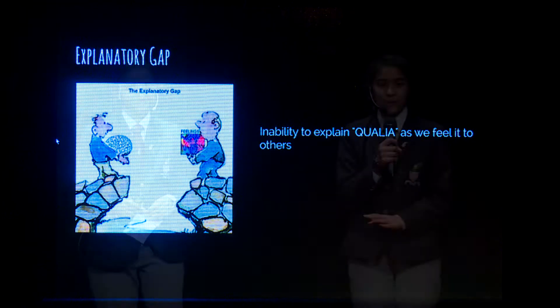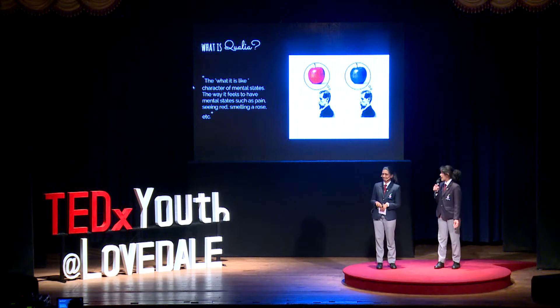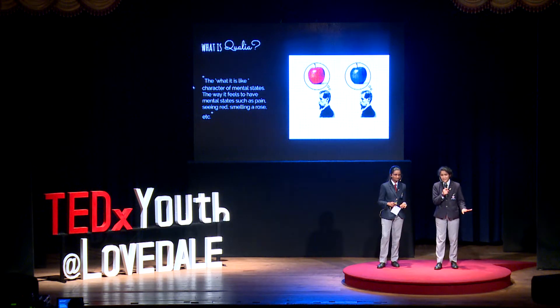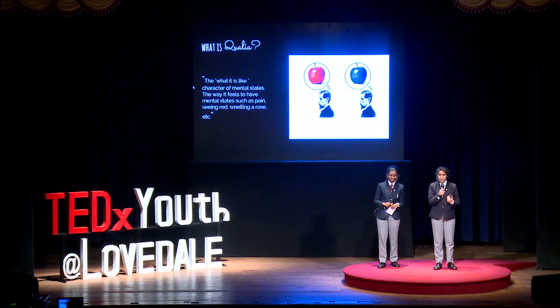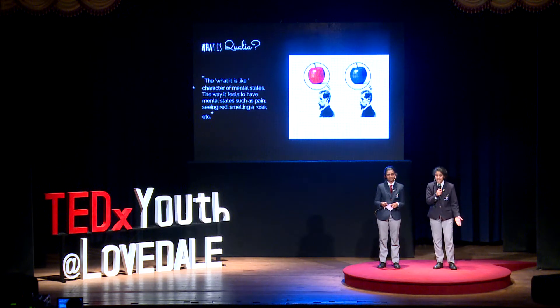This is because our language or our vernacular isn't enough to explain something as versatile and unique as color. This phenomenon is known as the explanatory gap — quite literally a gap in our abilities to explain. It is our inability to explain qualia as we feel it to others. Yes, I said qualia, and no, we did not make up that word. There have been many different definitions of qualia over time. The simplest being the 'what it is like' character of having mental states — the way it feels to have mental states such as pain, seeing red, smelling a rose, etc. Qualia is basically what we feel. It is our unique experiences of feeling pain, of seeing the color red or smelling a rose.